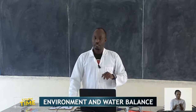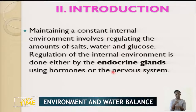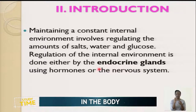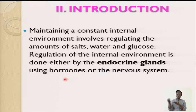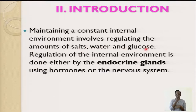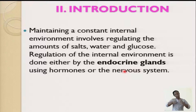The endocrine system uses hormones — chemical messengers produced by endocrine glands — and they are responsible for the function of homeostasis in our body. So salts, water, and glucose levels can be balanced in our body by either the endocrine system or the nervous system.